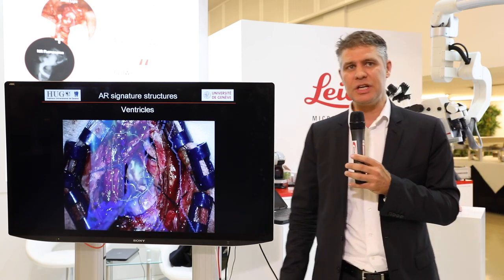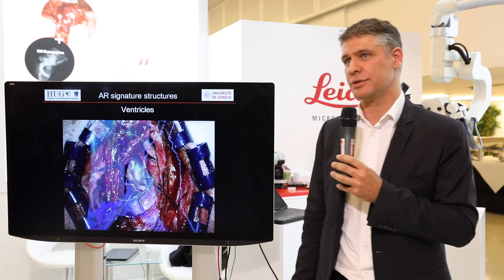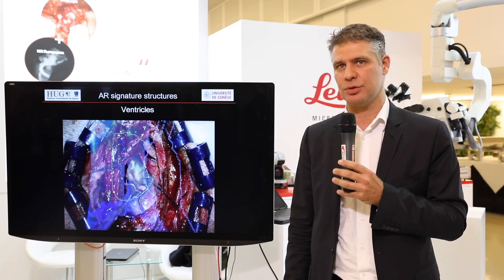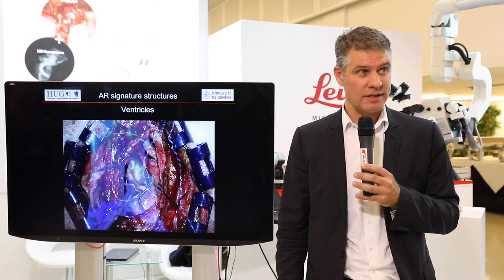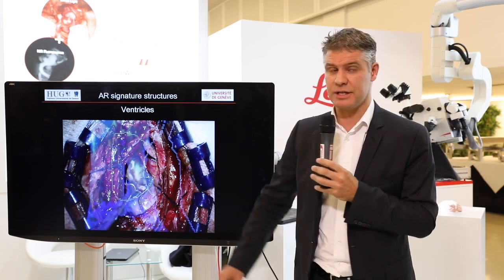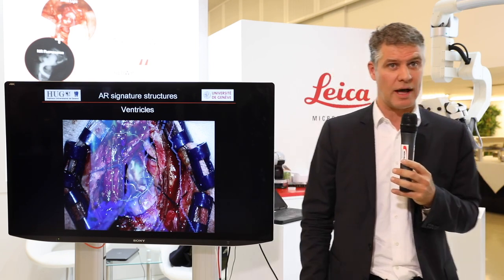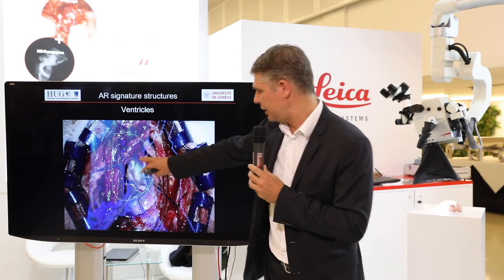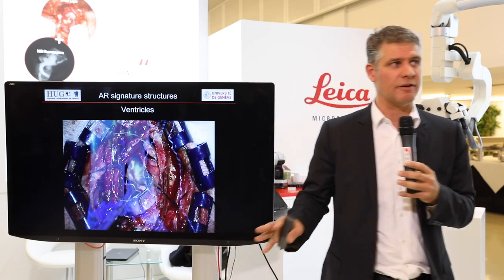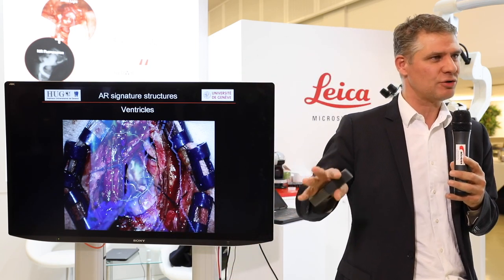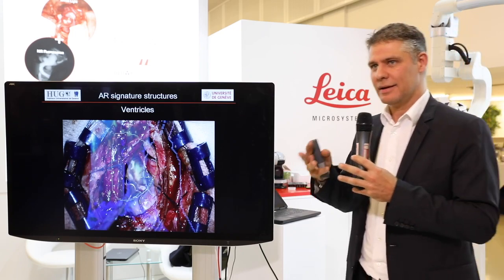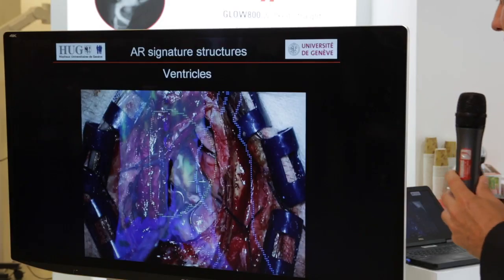If you go deeper, you end up with the ventricles. The ventricles are easy cavities to segment, so the blue image here is quite easy to obtain. When you open the ventricle, you can see whether your virtual ventricle is actually well adjusted with the real ventricle.